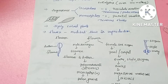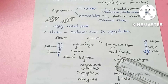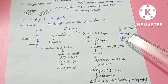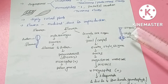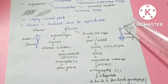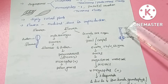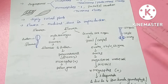The female sex organ is the pistil, also called the carpel. The pistil has three parts: the ovary at the base, the style — which is the stalk-like part — and the stigma, which is the opening at the top of the pistil.